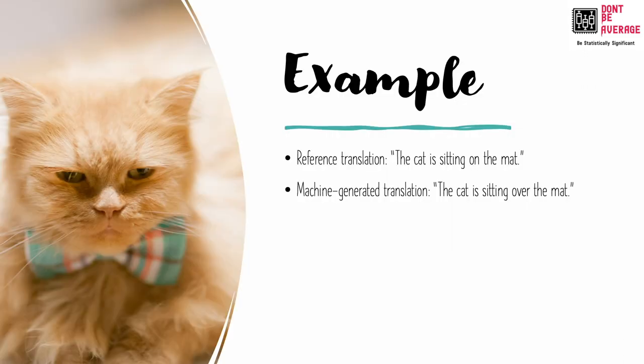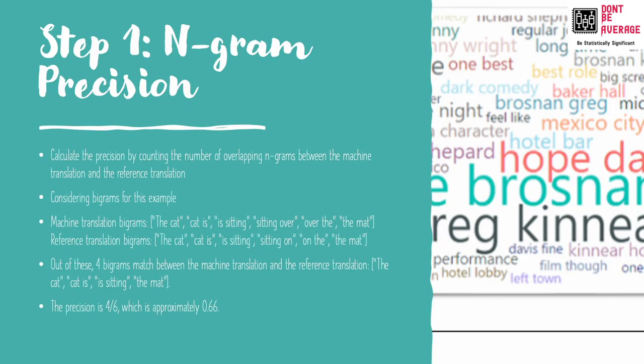Here is an example. Let's say we have a reference translation: 'The cat is sitting on the mat,' and the machine-generated translation is: 'The cat is sitting over the mat.' To calculate the BLEU score for this translation, step one is n-gram precision.